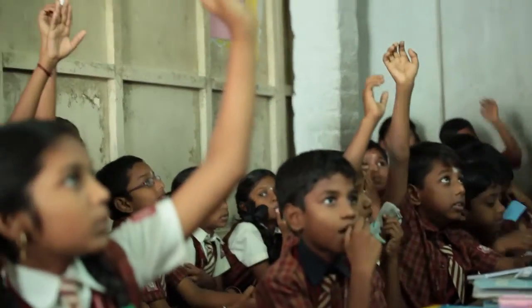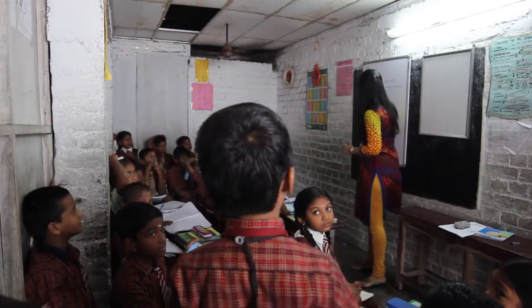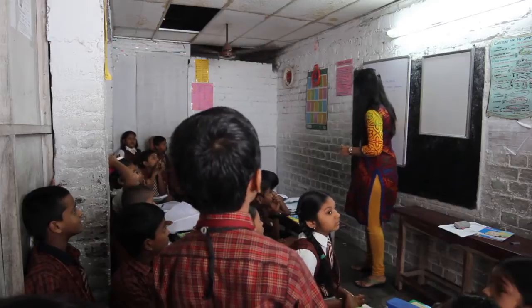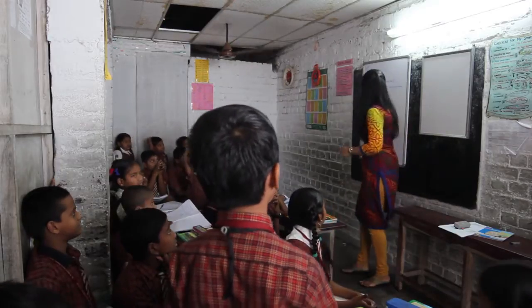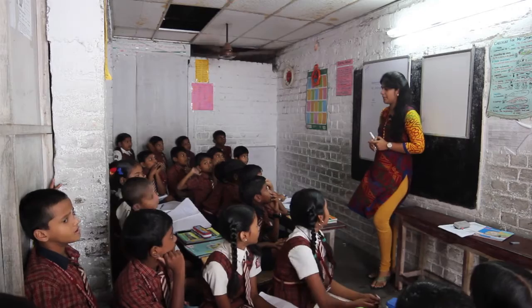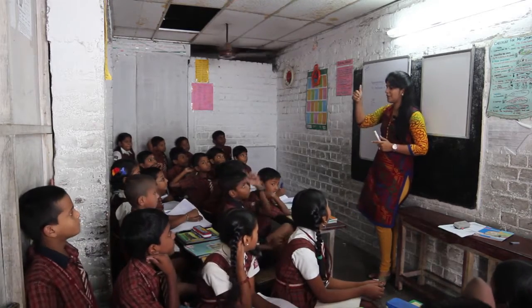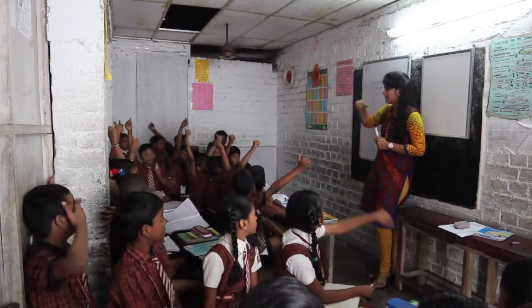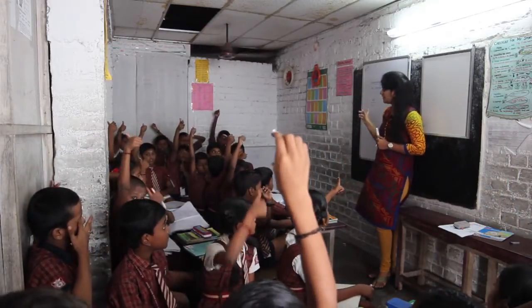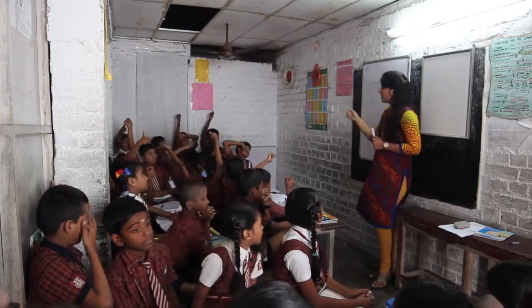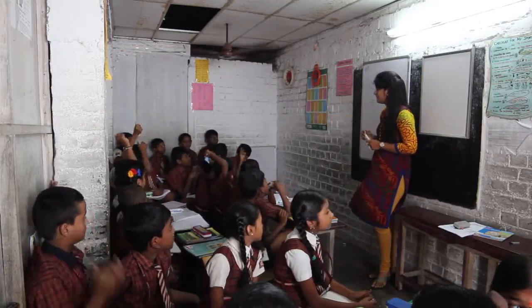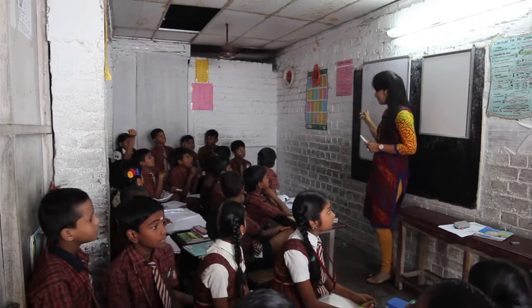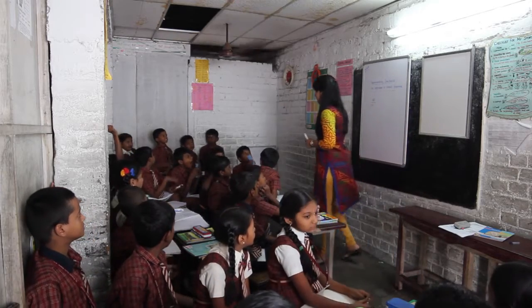Who can give me one example for improper fraction? Mitun said 25 divided by 10. Does everybody agree this is an improper fraction? Show me thumbs up if you agree. Lokesh, quickly, can you tell me why? Because the numerator is very big and the denominator is very small.